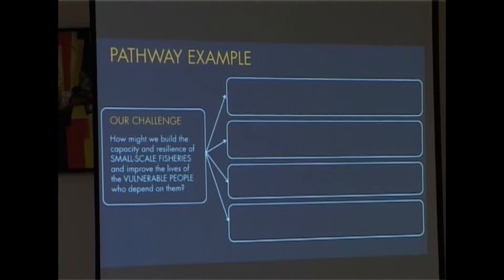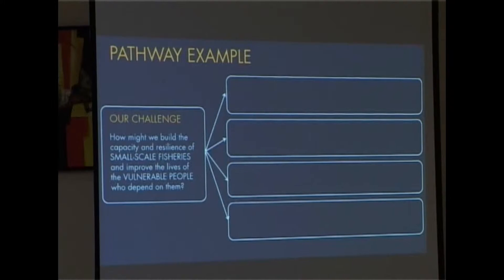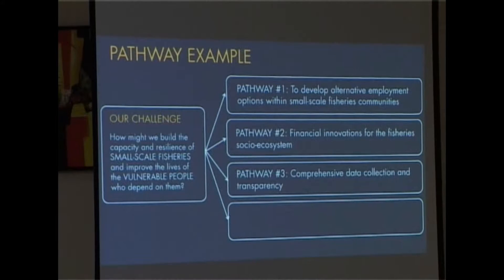We got together 30 experts — very similar to what we're doing here — back in the summer at Stanford and had them go through a similar process. We asked: what are the key issues that are happening? Who are the stakeholders out there that are influencing this issue? How can we think about what's driving the key issues, similar to how you asked 'why' in one of the previous tools? Through that entire process and synthesizing all the information, we came up with a collection of what we're calling pathways.